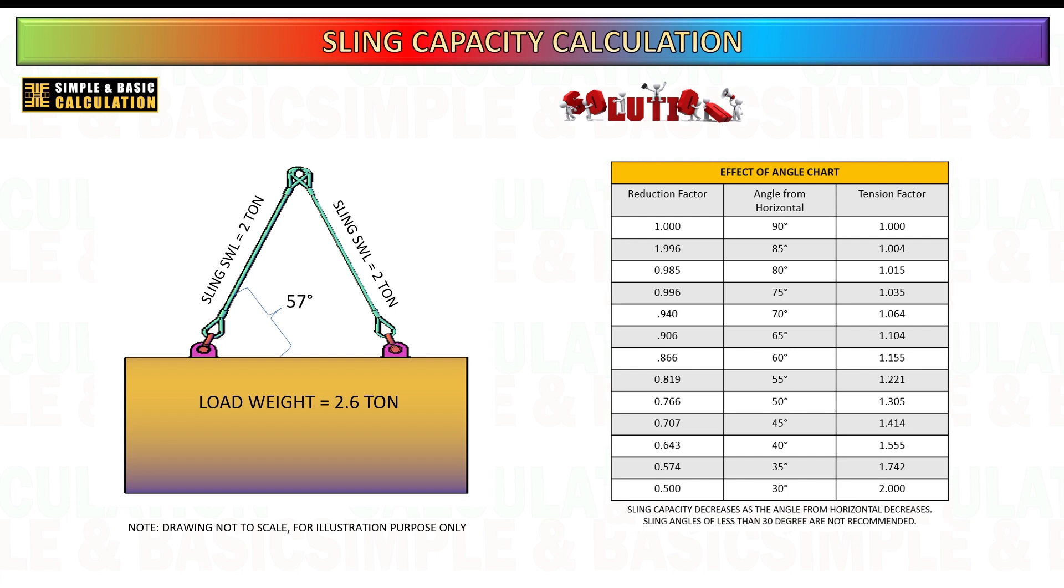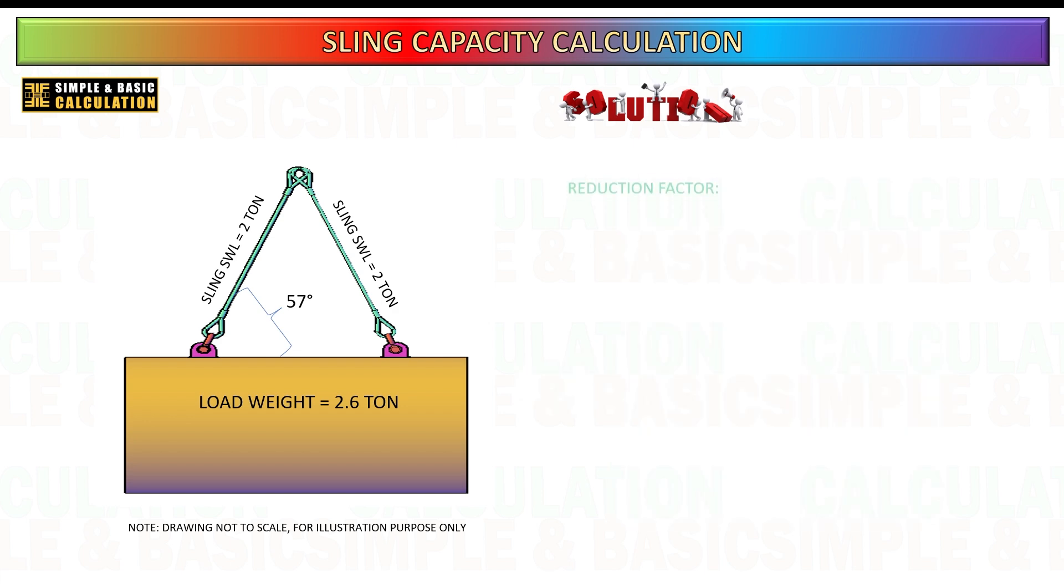Apply the reduction factor, use the value obtained from the chart as the reduction factor in your calculations. This reduction factor adjusts the rated capacity of the sling to account for the angle and ensures that the sling's effective load capacity is accurately assessed. By following these steps, you can effectively incorporate the reduction factor into your rigging calculations, even if you have forgotten the specific formula. Utilizing the chart helps maintain accuracy and safety in your lifting operations.